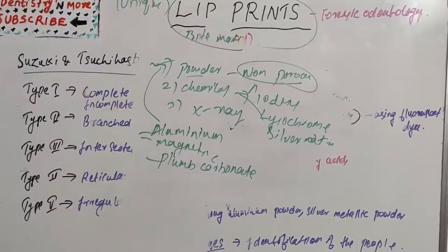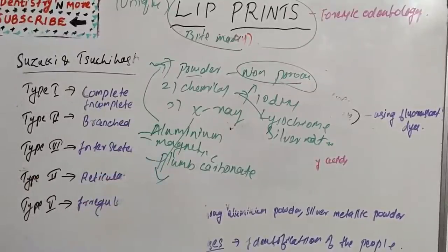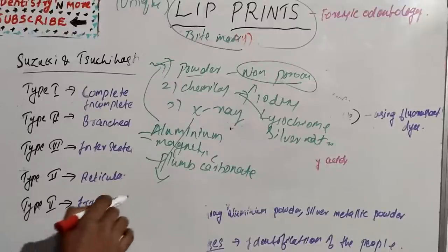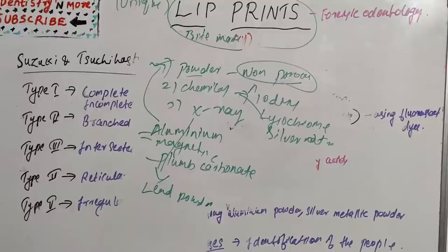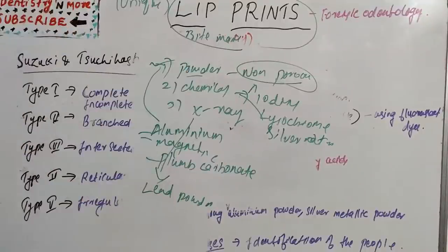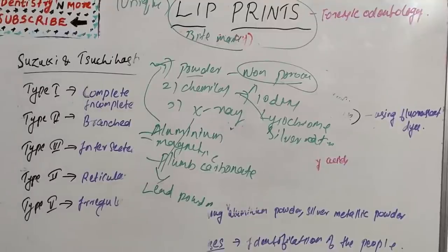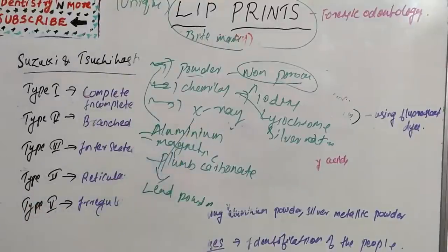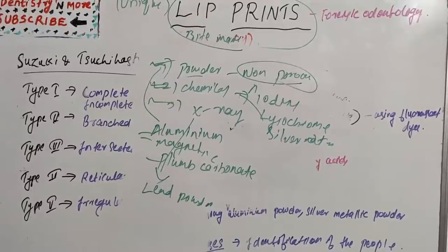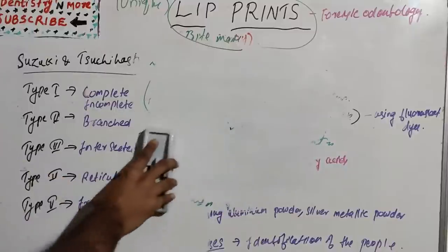The third method is the X-ray method. Lead powder is distributed on the suspected area with the help of a brush. The dusted area is then X-rayed, and the photographic film should be treated with the required chemicals. So the three methods for developing lip prints are: powder method, chemical method, and X-ray method.